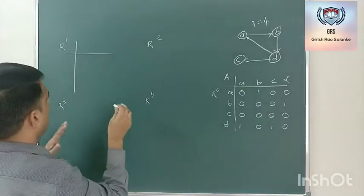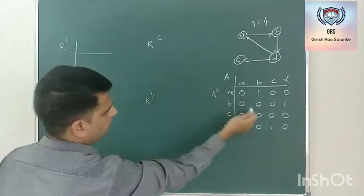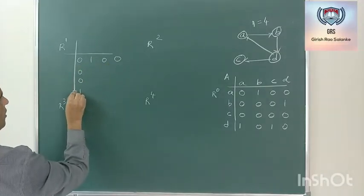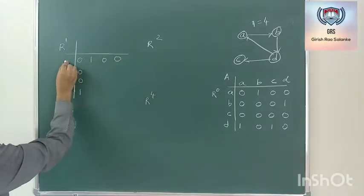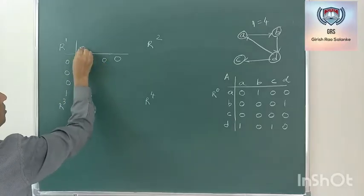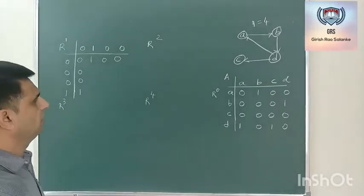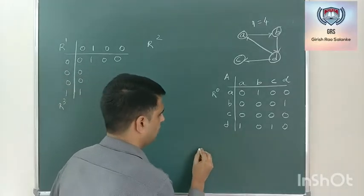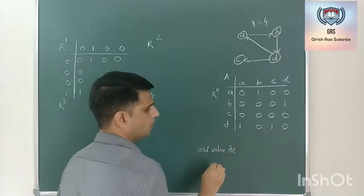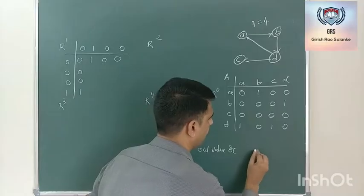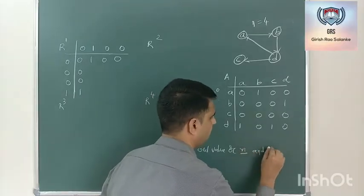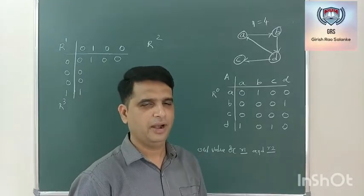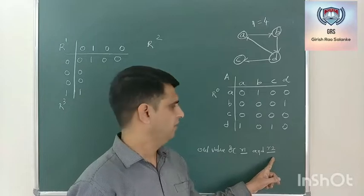In the first iteration, the first row and first column of the previous matrix remain as they are. First row is 0, 1, 0, 0, and first column is 0, 0, 0, 1. This is the reference. To calculate the remaining values, we perform this operation: new value = old value OR (reference column value AND reference row value). This AND operation will be true only if both values are 1. If either reference is 0, we directly take the old value.